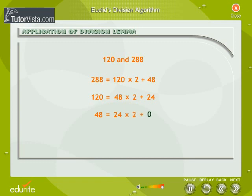So we apply the division lemma to 48 and 24. Now, the remainder is 0 and we stop the procedure. The divisor at this stage is 24.